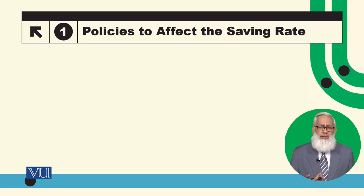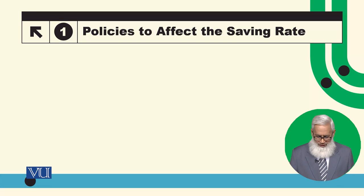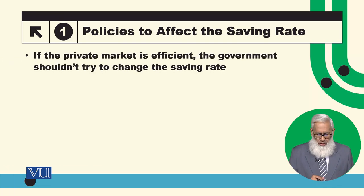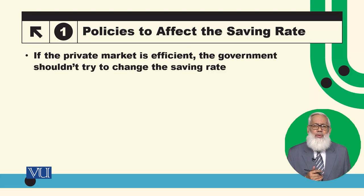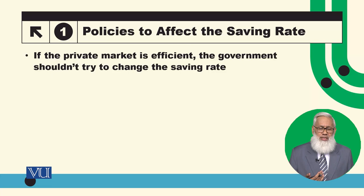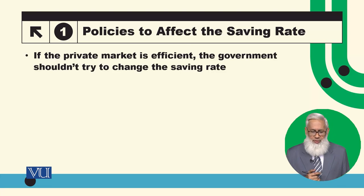So how do they make their policies so that they can improve their living standards in the long run? We have seen in growth models that saving rates can help in improving living standards in the long run. What saving rates should the government target so that long-run living standards improve? We will talk about this.